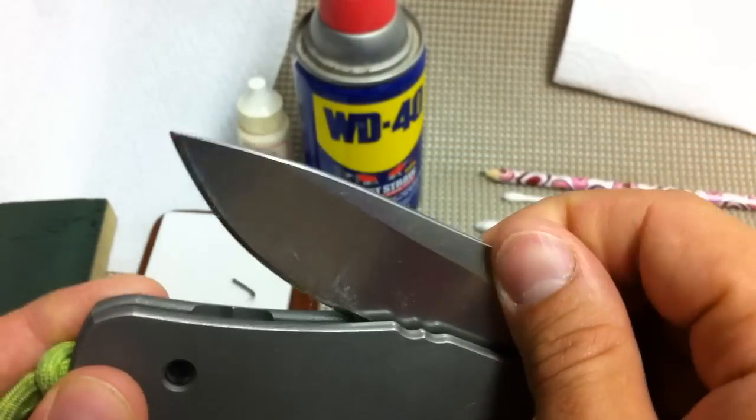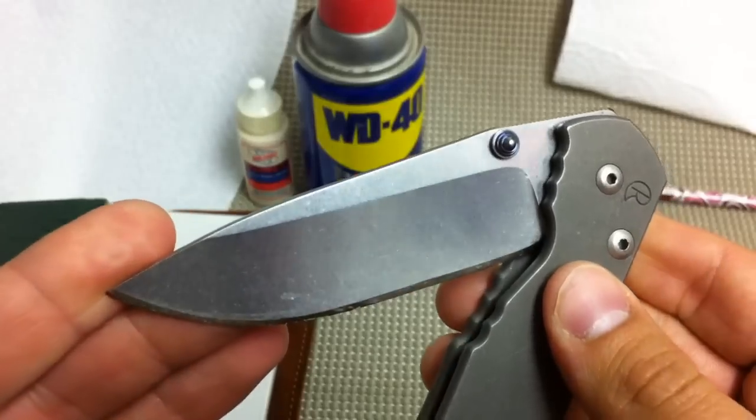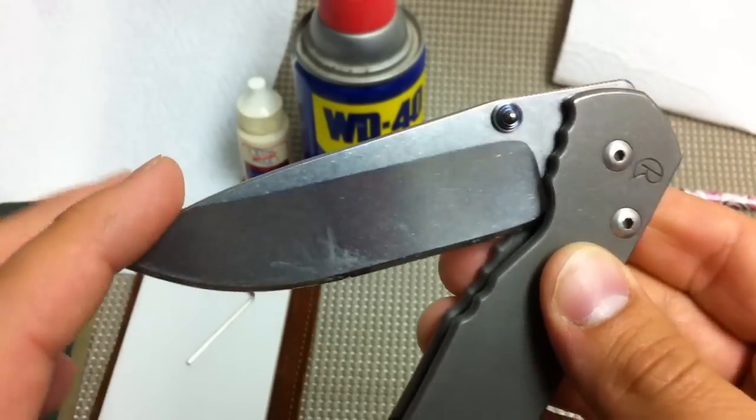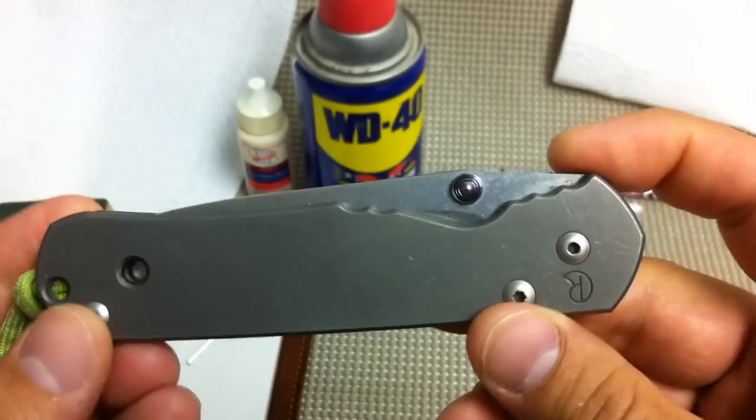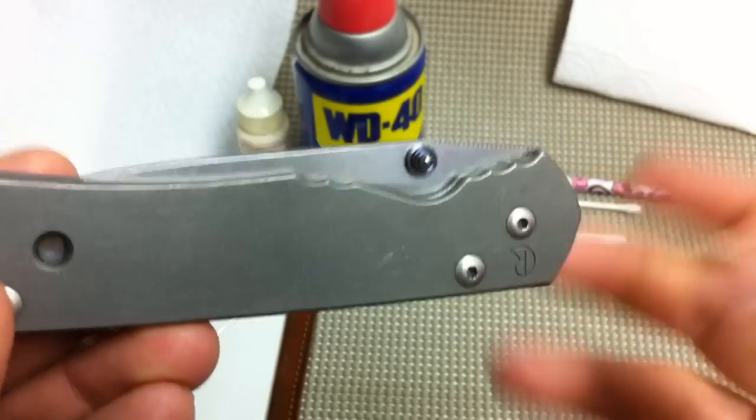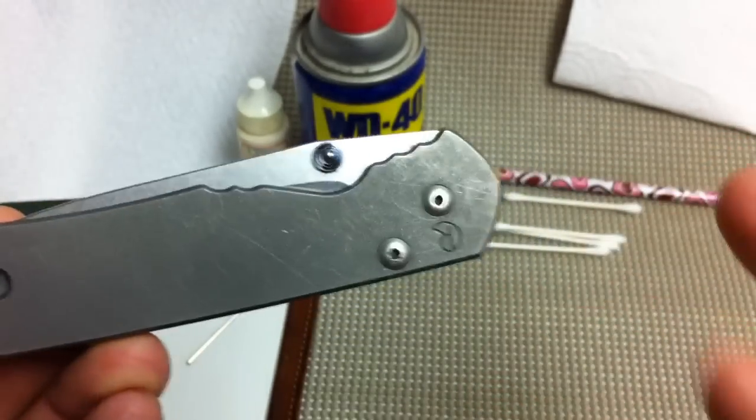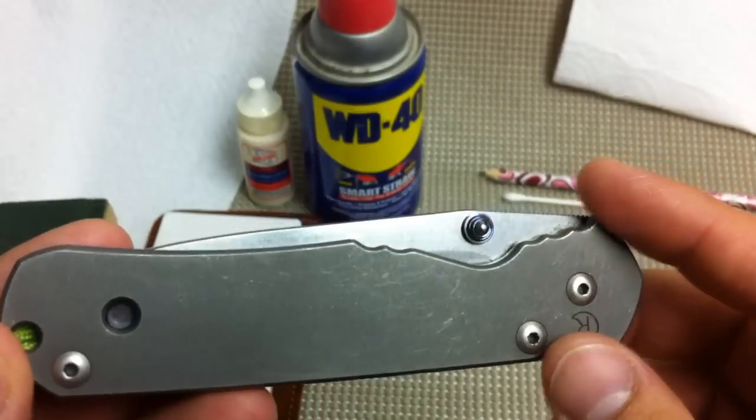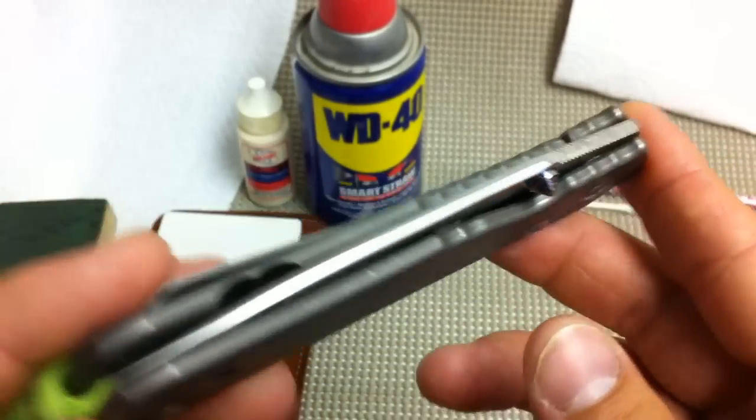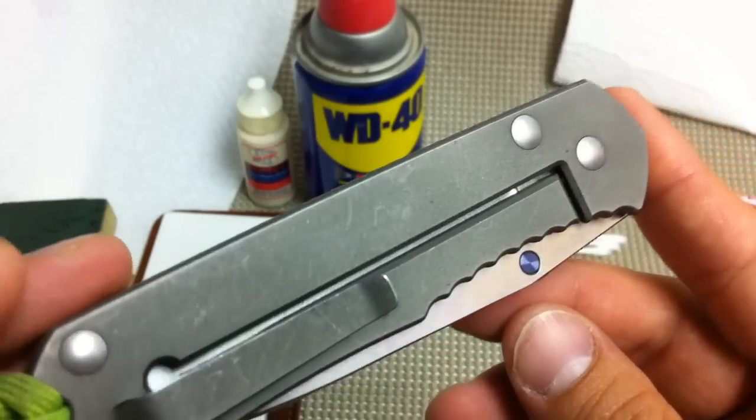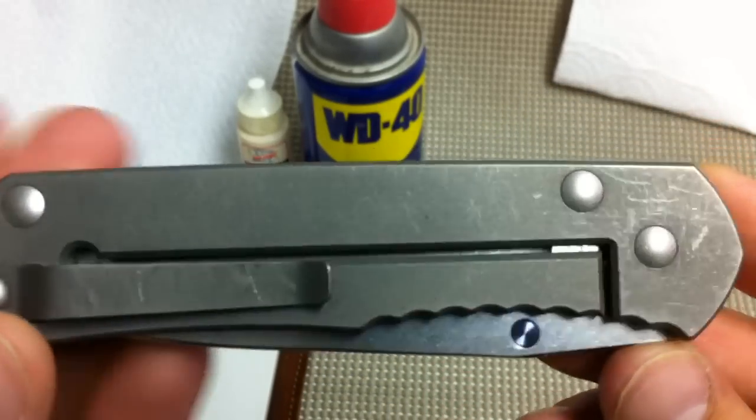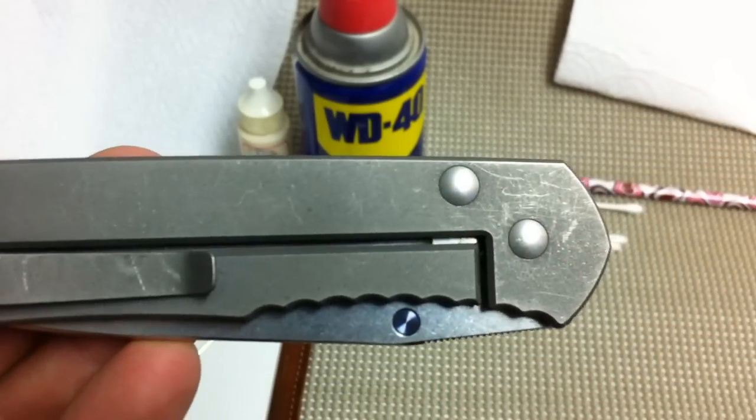The nice thing about the BG42 is it was ran around 61. So this holds its edge like any other high-end knife. Not that the S30 or the S35VN is bad, but this is better, in my opinion, shown in real-world use. It just holds the edge longer than my S30V Sebenzas.